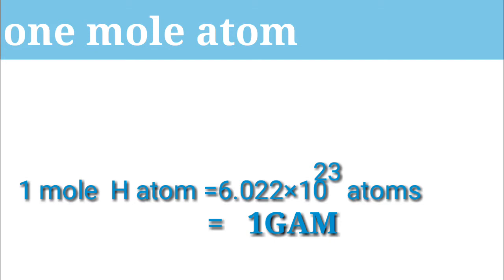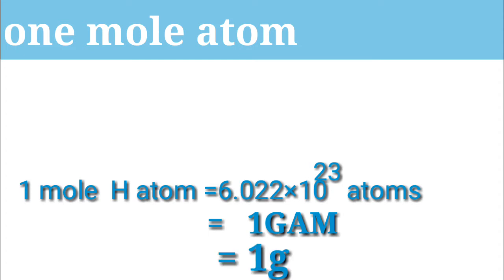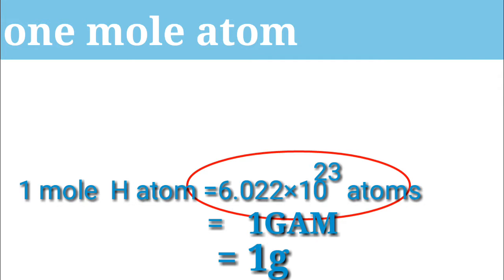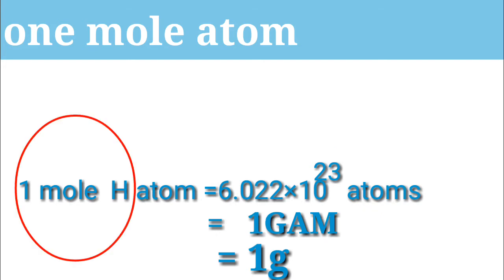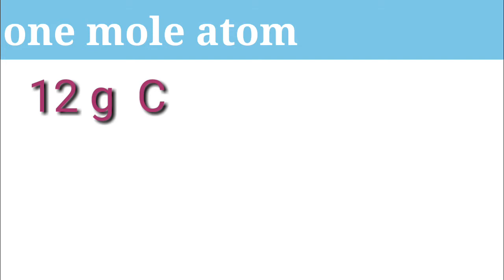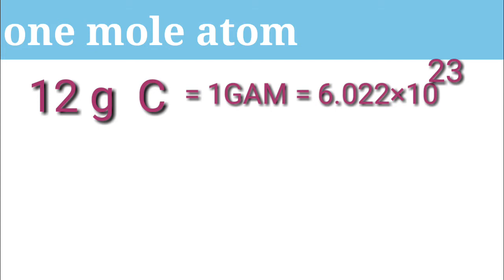How many grams of hydrogen atom? 1 gram of hydrogen. 1 gram of hydrogen. That is 1 gram of hydrogen. Let's see — 1 gram of hydrogen is 6.022 into 10²³ atoms, which is 1 mole atom. How many grams of hydrogen are we dealing with?